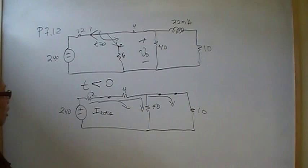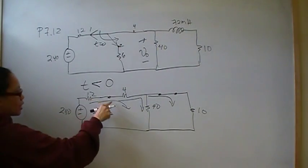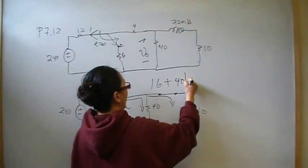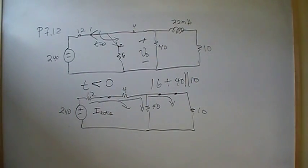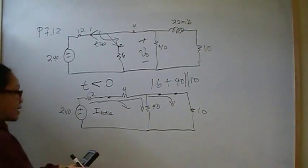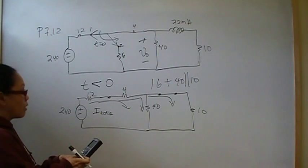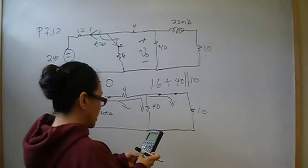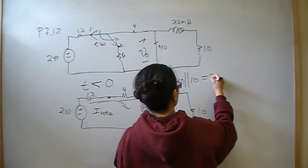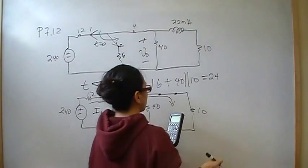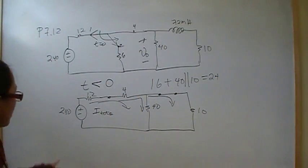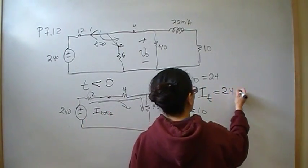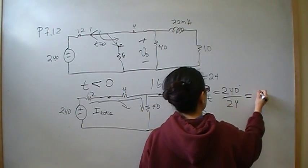So I total is V over R equivalence. So this is going to be 16 right here in series with, we've got 16 is in series with 40 in parallel with 10. So then that gives us 1 over 40 plus 1 over 10. So that's going to be 16 plus 8, which is 24. So then the total current that's going through, the I total, is going to be 240 volts over 24 ohms, which is 10 amps.